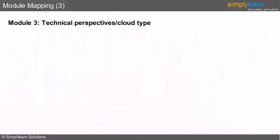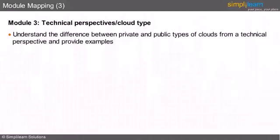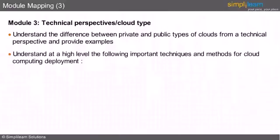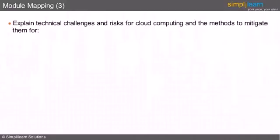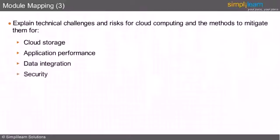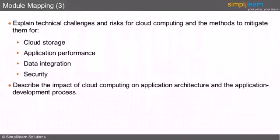Module 3: Technical Perspectives or Cloud Types. This module will help us understand the difference between private and public types of clouds from a technical perspective and provide examples. It will also discuss at a high level the important techniques and methods for cloud computing deployment, such as networking, automation and self-service, federation, and the role of standardization. In addition, it will explain technical challenges and risks for cloud computing and discuss methods to mitigate them for cloud storage, application performance, data integration, and security. It will also describe the impact of cloud computing on application architecture and the application development process.